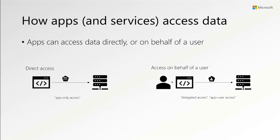When we're talking about access on behalf of a user, we sometimes refer to it as delegated access, sometimes as app-plus-user access, and in some cases I've heard it called constrained impersonation or impersonation access. But all of these are access on behalf of a user. One important thing to call out: on the identity platform, this is always on behalf of a signed-in user — a user who at some point actually signed into the application, as opposed to arbitrary impersonation of a user who didn't sign in.